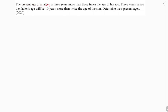The present age of a father is 3 years more than 3 times the age of his son. Three years hence, the father's age will be 10 years more than twice the age of the son. Determine their present ages.